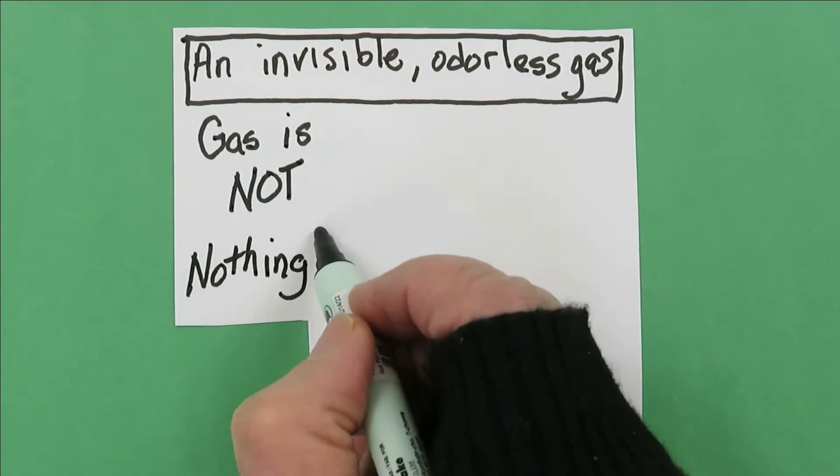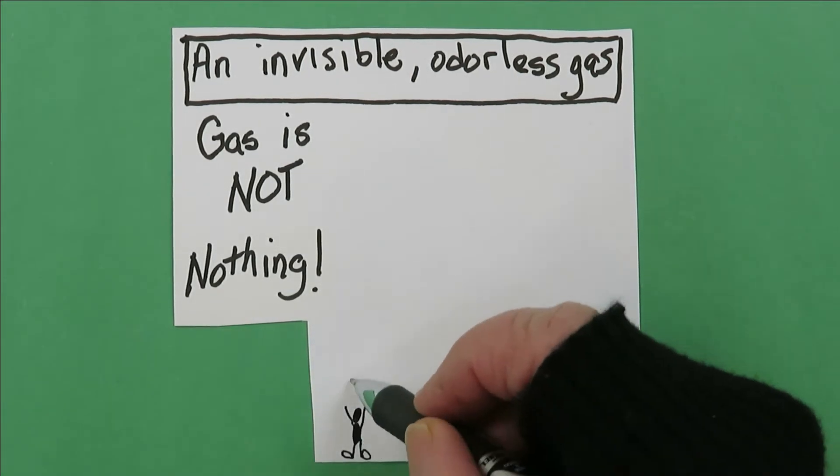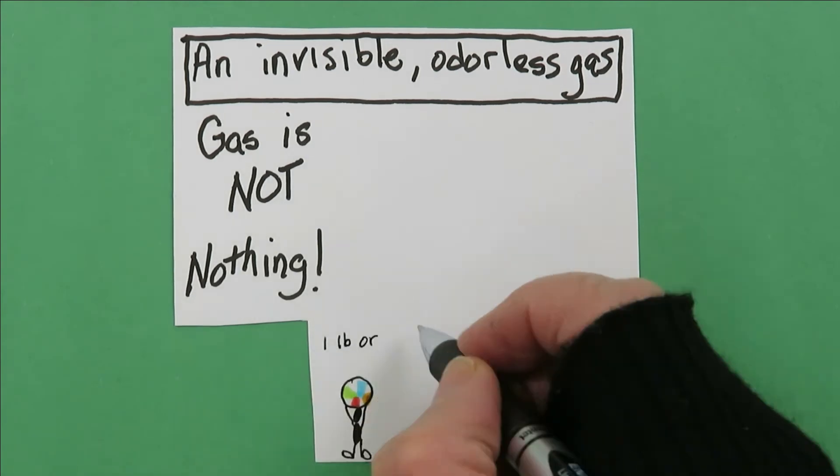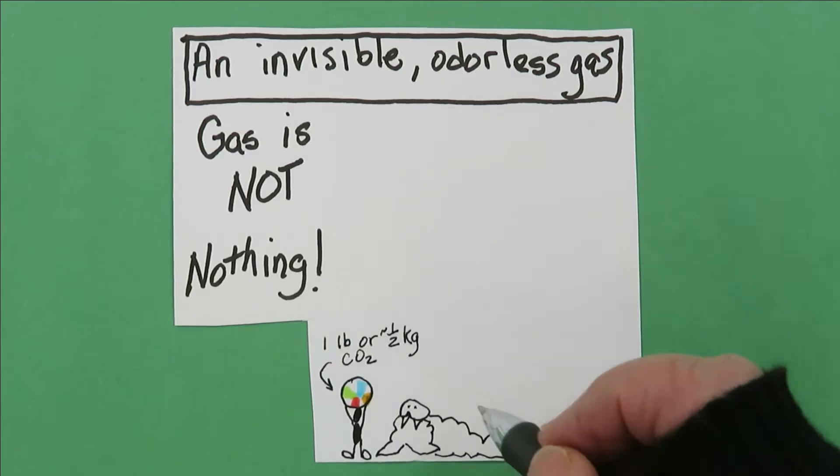Note. Just because CO2 is invisible and odorless, it is not nothing. Gases also have volume, and they weigh something, too. A pound of CO2, almost a half a kilogram, would fill a beach ball about 30 inches or 77 centimeters wide.